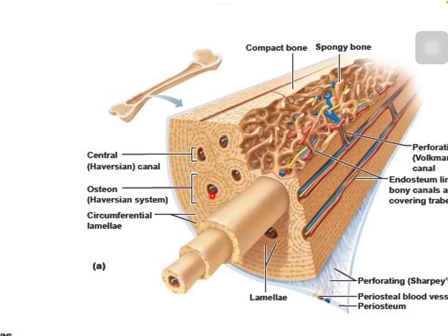The Haversian canal is located centrally in the Haversian system and is surrounded by concentric layers of calcified bone tissue. So the Haversian system is formed of concentric circular layers of bone lamellae running along the circular axis of the long bones — not parallel like the outer circumferential lamellae. This system is enclosed and smaller compared to the outer circumferential lamellae.